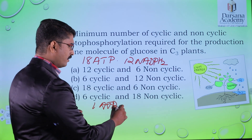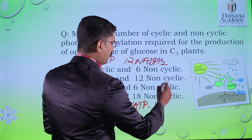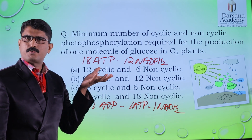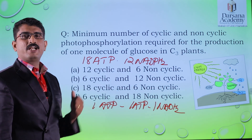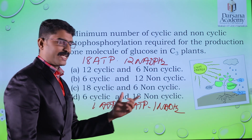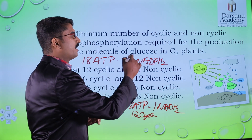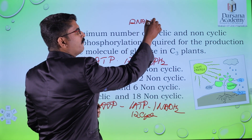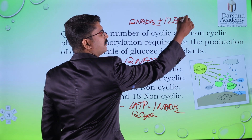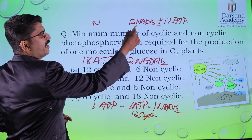From one non-cyclic photophosphorylation we will get one ATP and also one NADH2. The question asks for the minimum number of cyclic and non-cyclic photophosphorylation required. Since NADH2 is obtained only from non-cyclic, it should undergo 12 cycles — that is, 12 non-cyclic photophosphorylation — to get 12 NADH2. Along with this, we also get 12 ATP.